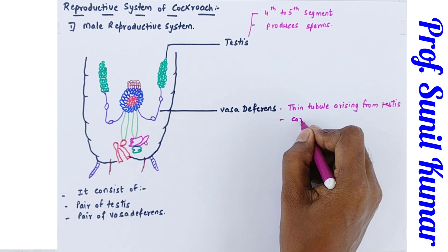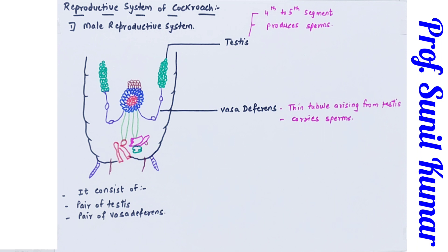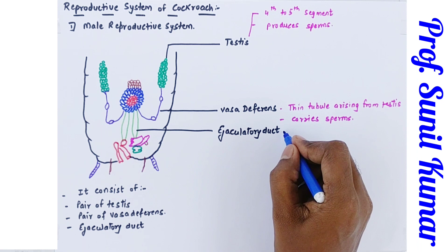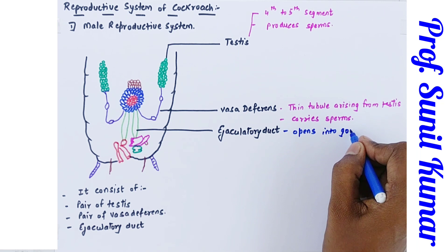The next important part is the ejaculatory duct, which arises from the seminal vesicle. The ejaculatory duct helps in the release of sperm into the female reproductive organ. Basically, the ejaculatory duct opens into a small reproductive opening called the gonopore, which is below the anus, and this gonopore transfers the sperm while mating into the female genital opening.